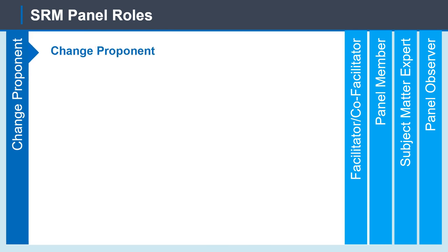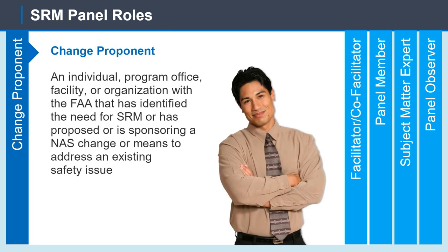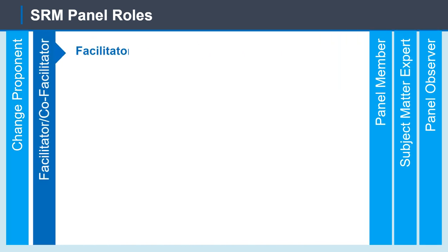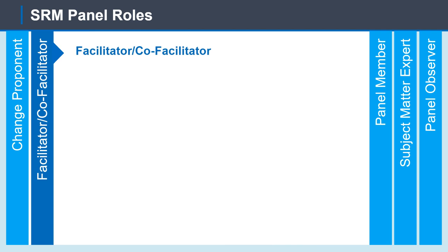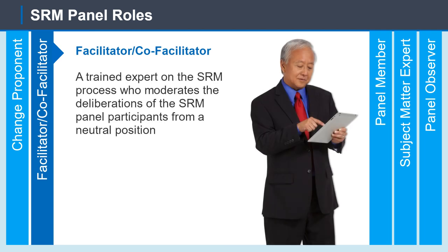The first role is Change Proponent: an individual, program office, facility, or organization within the FAA that has identified the need for SRM, or has proposed or is sponsoring a NAS change or means to address an existing safety issue. The second role is Facilitator or co-facilitator: a trained expert on the SRM process who moderates the deliberations of the SRM panel participants from a neutral position. Communication, coordination, and preparation between the change proponent and facilitator or co-facilitator is important for the success of the SRM panel.